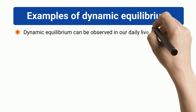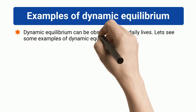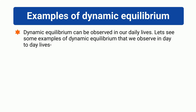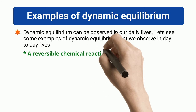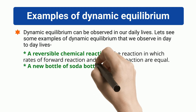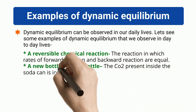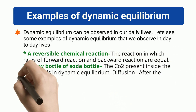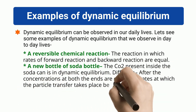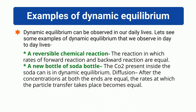Dynamic equilibrium can be observed in our daily lives. Let's see some examples. A reversible chemical reaction: a reaction in which rates of forward reaction and backward reaction are equal. A new bottle of soda: the CO2 present inside the soda can is in dynamic equilibrium. Diffusion: after the concentrations at both ends are equal, the rates at which particle transfer takes place becomes equal.